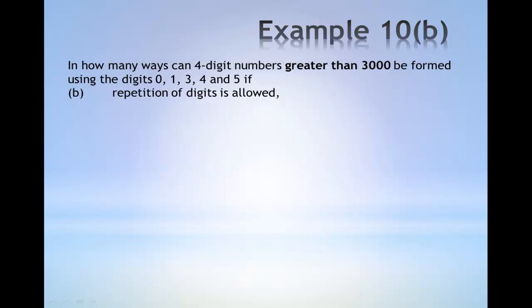Example 10b: In how many ways can 4-digit numbers greater than 3000 be formed using digits 0, 1, 3, 4 and 5 if repetition of digits is allowed this time?